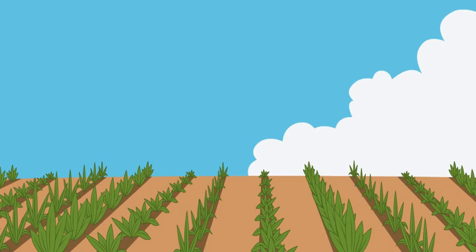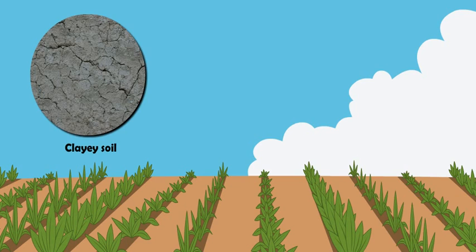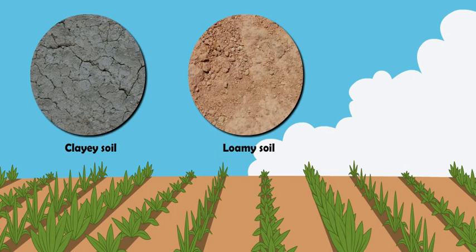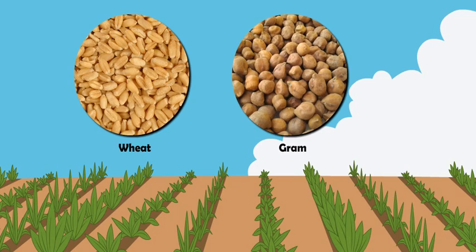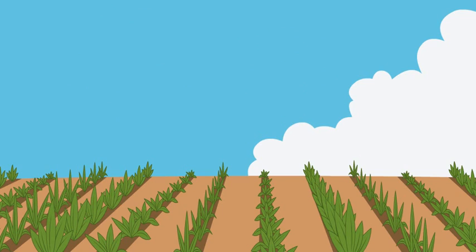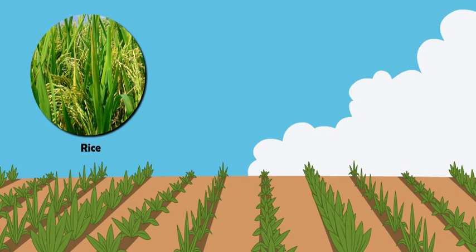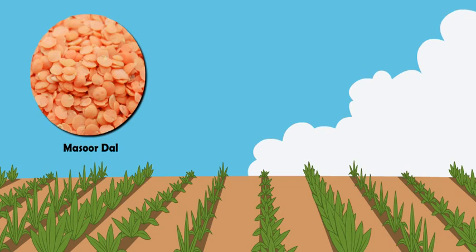Soils and crops: One, clay soil and loamy soil are both suitable for growing cereals like wheat and gram, as such soils are good at retaining water. The best soil for growing wheat is loamy soil, as it is rich in humus and very fertile. Soil rich in clay and organic matter with good water retention is ideal for growing paddy. For growing lentil or masoor dal and other pulses, loamy soil that drains water easily is required.